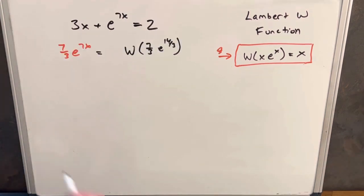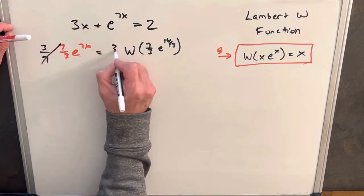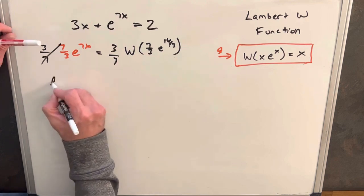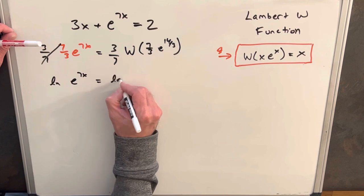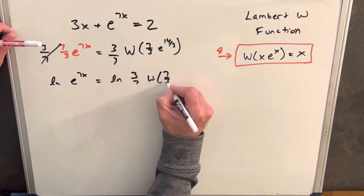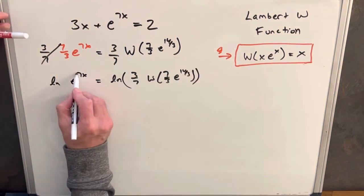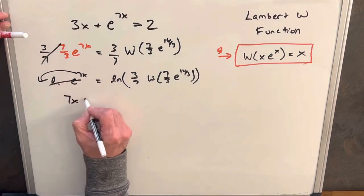Okay so from here what we can do is we can multiply 3 7ths on both sides to get, so we'll have a cancellation here. And then what we can do next is take the natural log on both sides. So we'll have natural log e to 7x, natural log 3 7ths, W 7 thirds, e to the 14 thirds. And here we'll pull out our 7x. We'll just have, and this will cancel, so we'll just have a 7x on the left side.